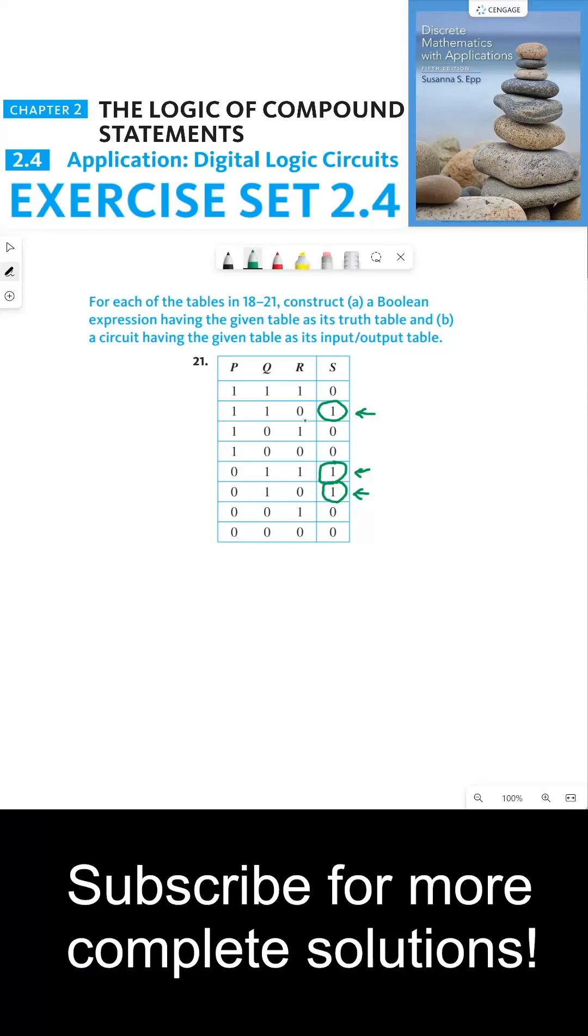If the inputs are aligned in a certain way, we can get the output to be 1 under these three circumstances. So under these three different circumstances for our input signals, we can get an output signal of 1.